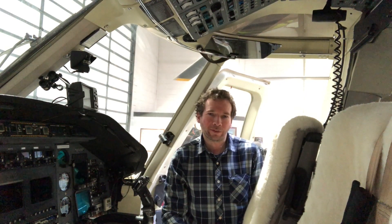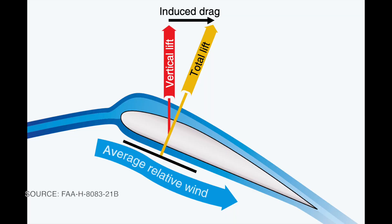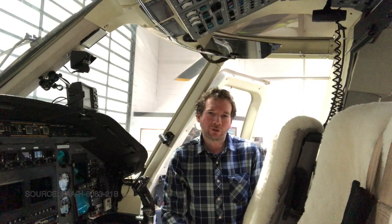How does an airfoil generate lift efficiently? It's called Bernoulli's principle. It works because air flows over the top of the wing faster than it flows under the bottom, and the air on top exerts a lower pressure than the air on the bottom. Subtracting one from the other results in a net upward pressure, which we call lift. Some of the lift contributes to drag as well, so wings are shaped to create the most lift with the least drag, discovered through wind tunnel testing.